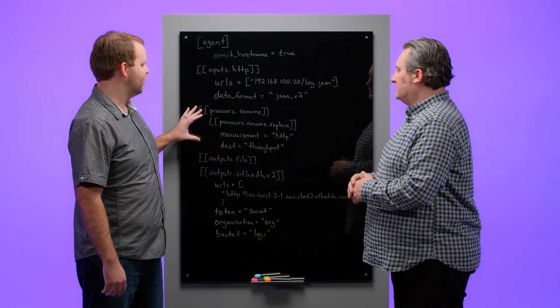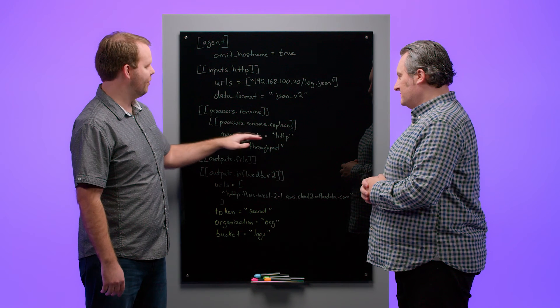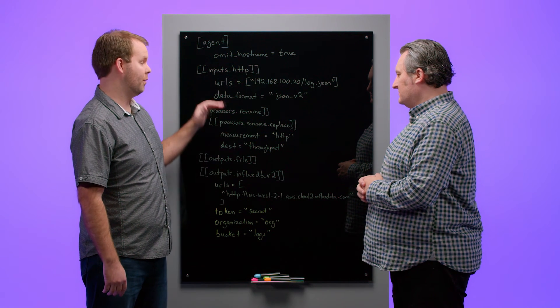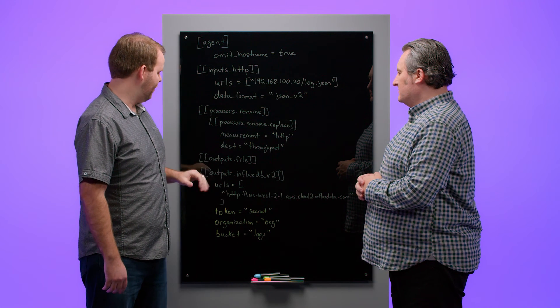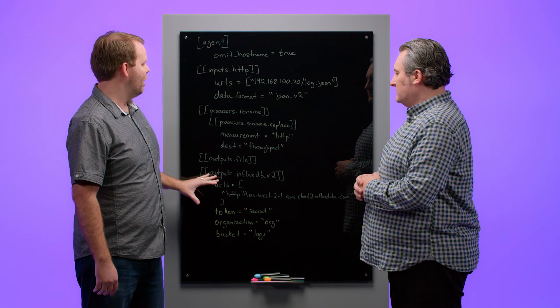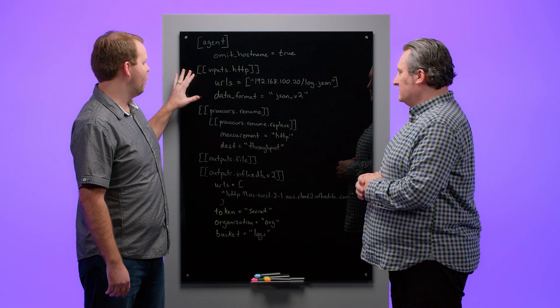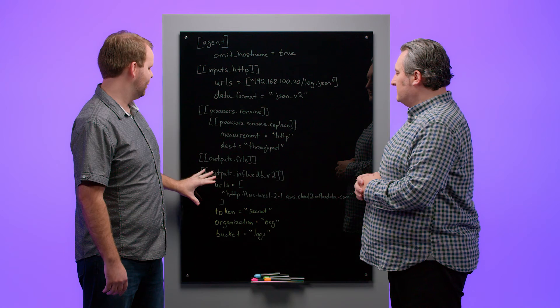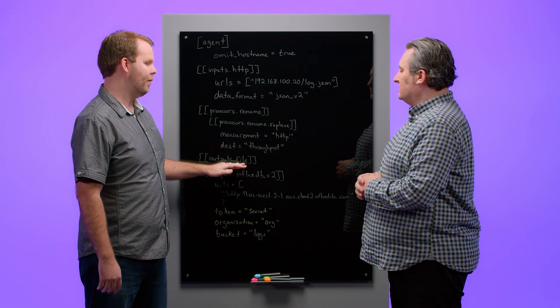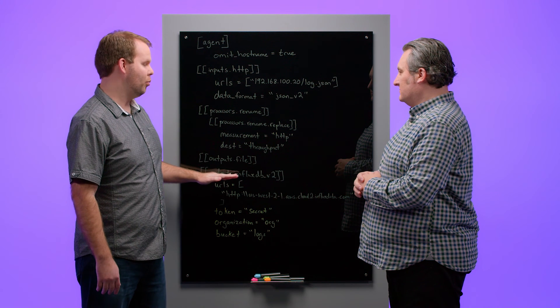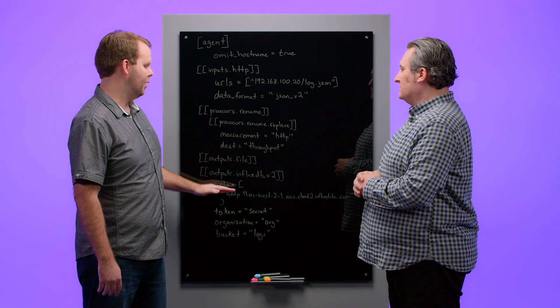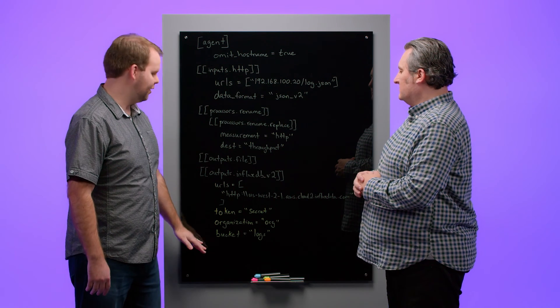The next section is a processor. In this case, we're renaming the final metric. Instead of naming it HTTP because it's coming from the HTTP input, we're renaming it to throughput. And finally, at the bottom, we have two outputs. In Telegraph, all the data from all the various inputs gets sent to all the various outputs. In this case, we're sending it out to a file — this is a great way to debug Telegraph and ensure that the data you're collecting is what you want. The final section is output to InfluxDB. This is our InfluxDB v2 output, where we're sending data to our cloud-hosted InfluxDB server along with the various necessary information.